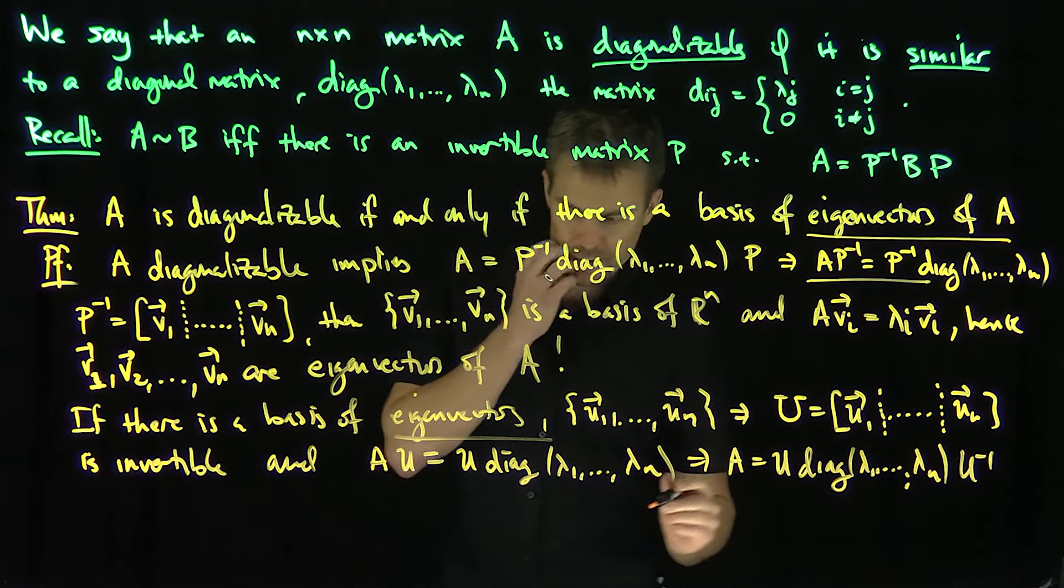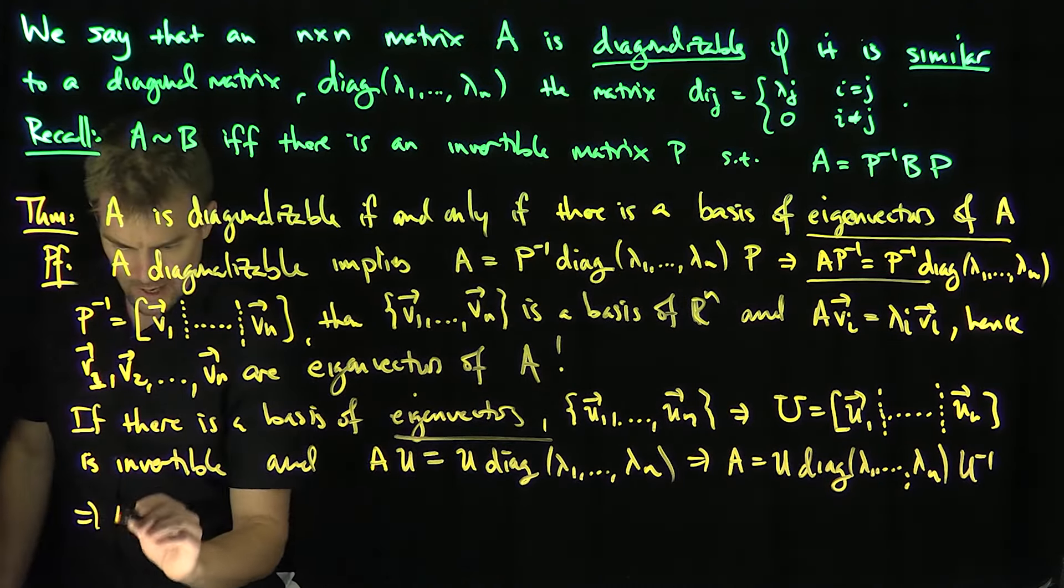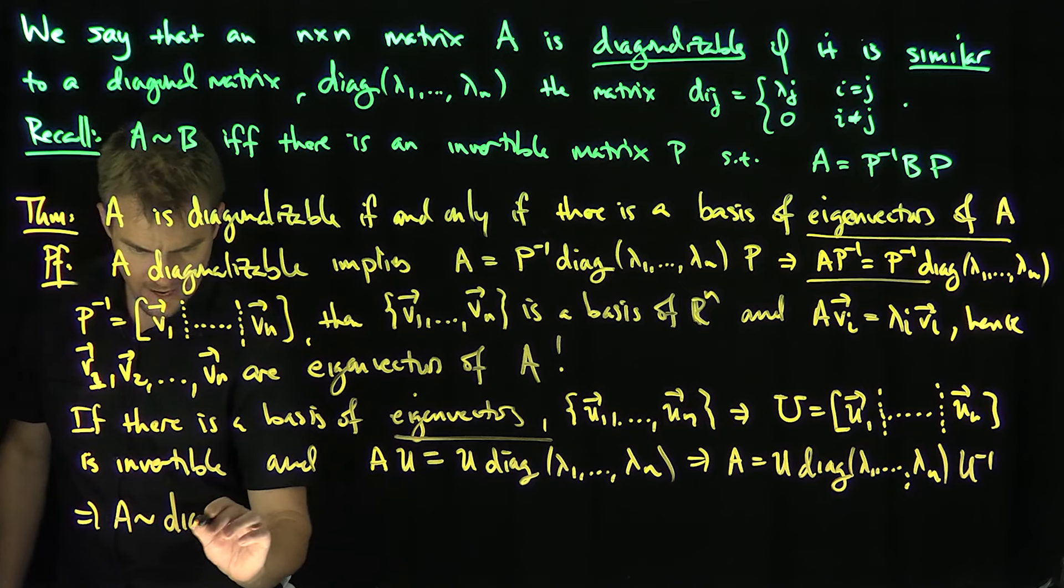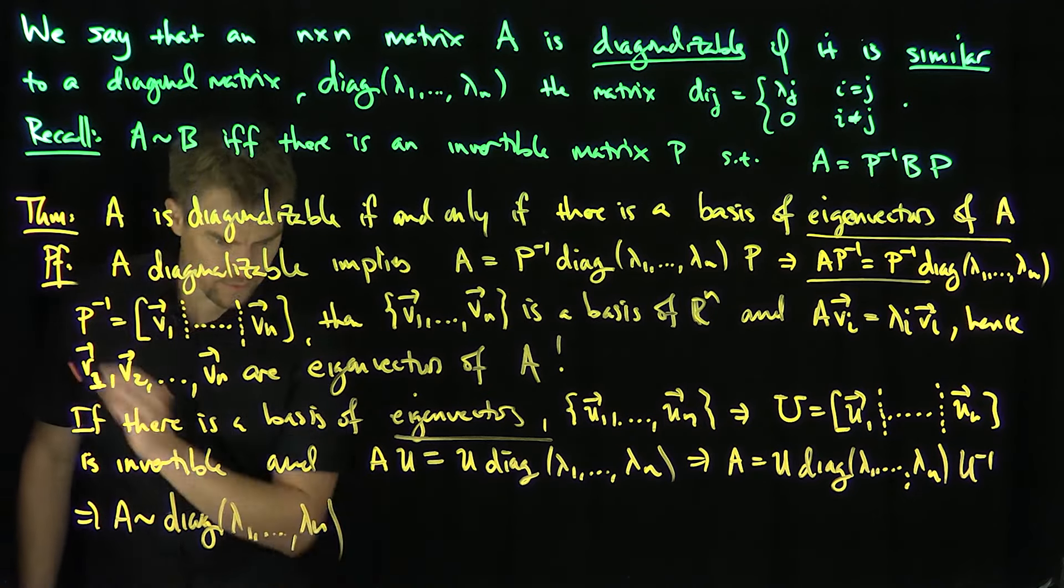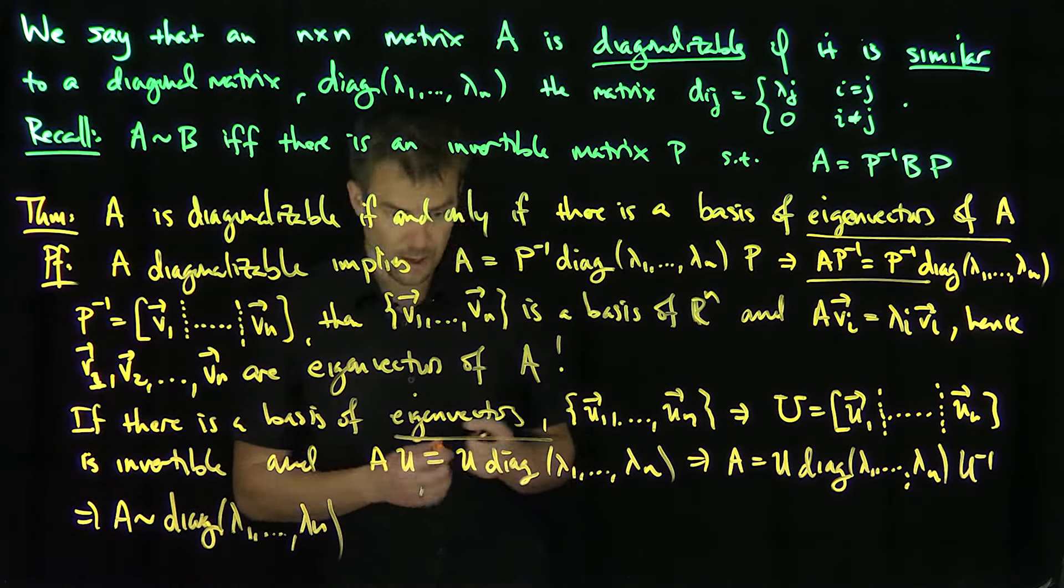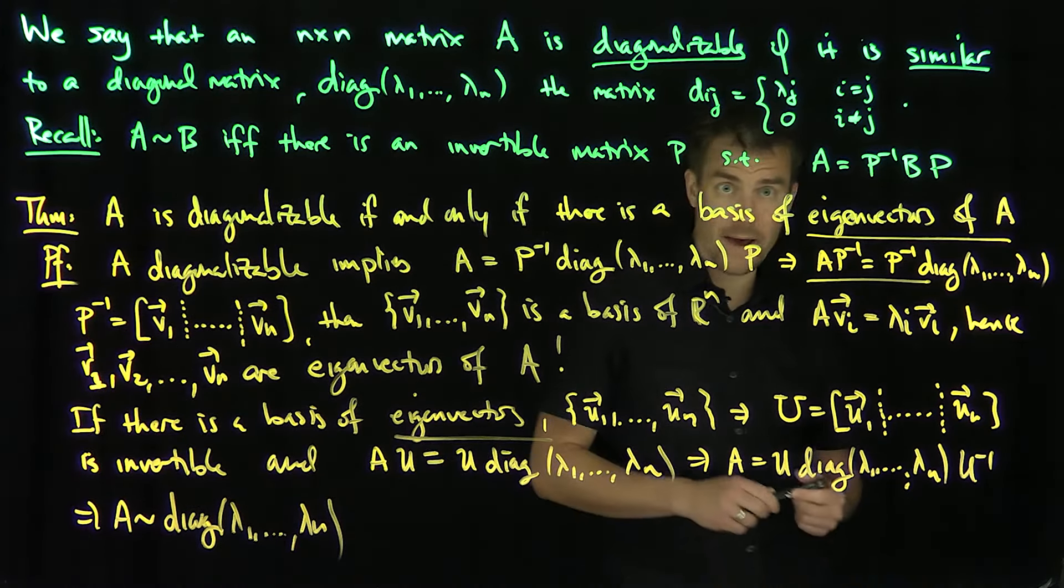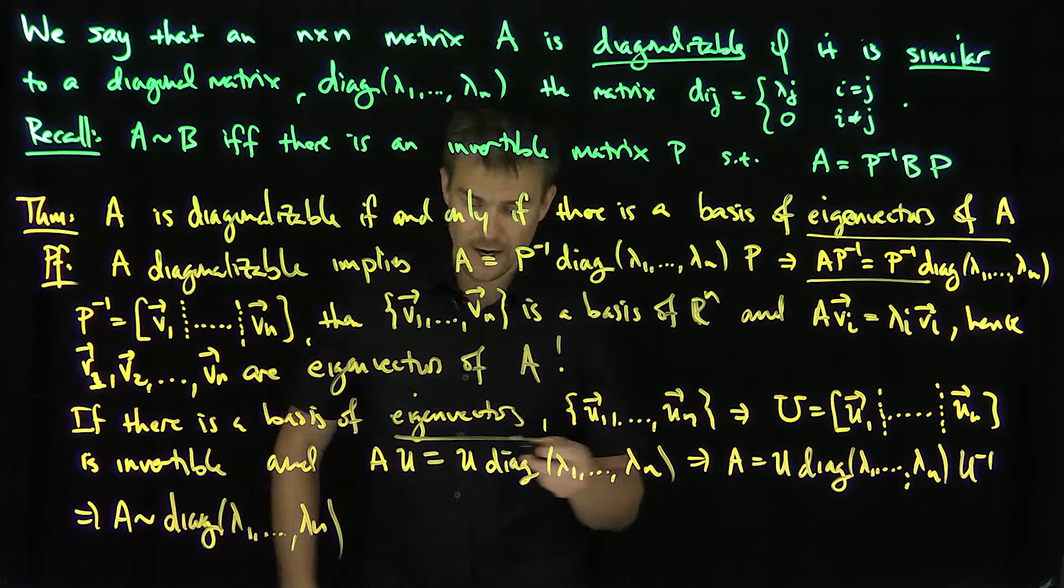And that says that A is similar to the diagonal matrix like that. So diagonalizability is equivalent to there being a basis of eigenvectors. It's important to keep three examples in the back of your mind when you're talking about these things.